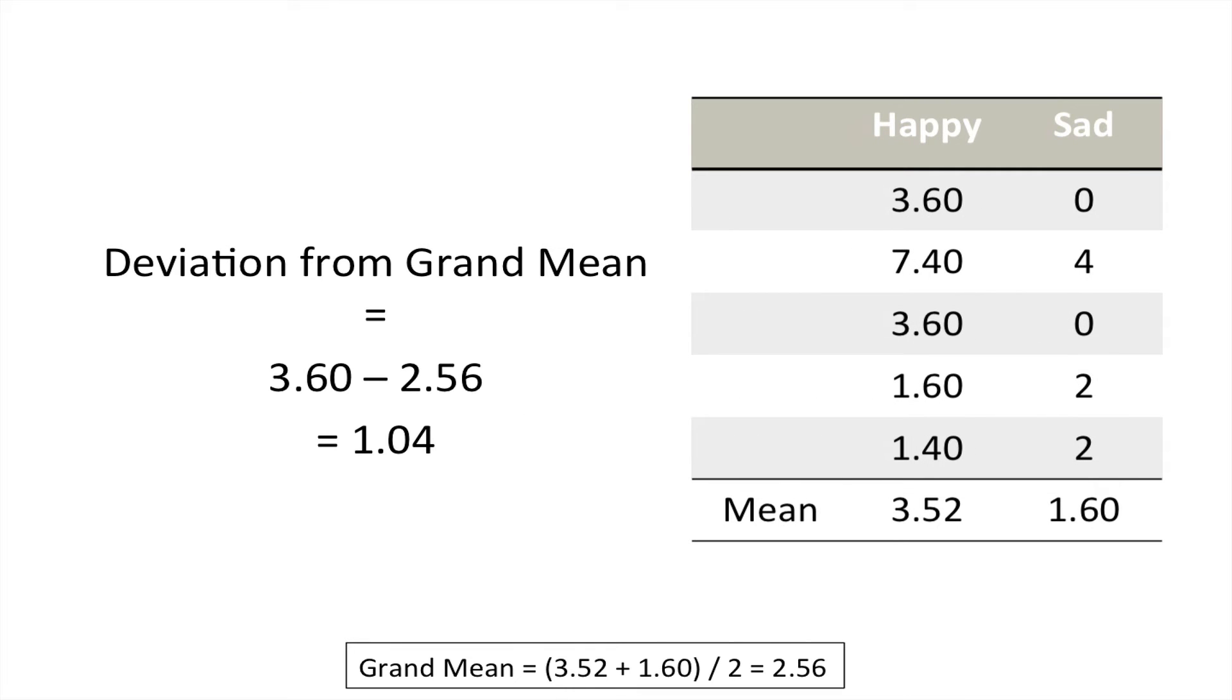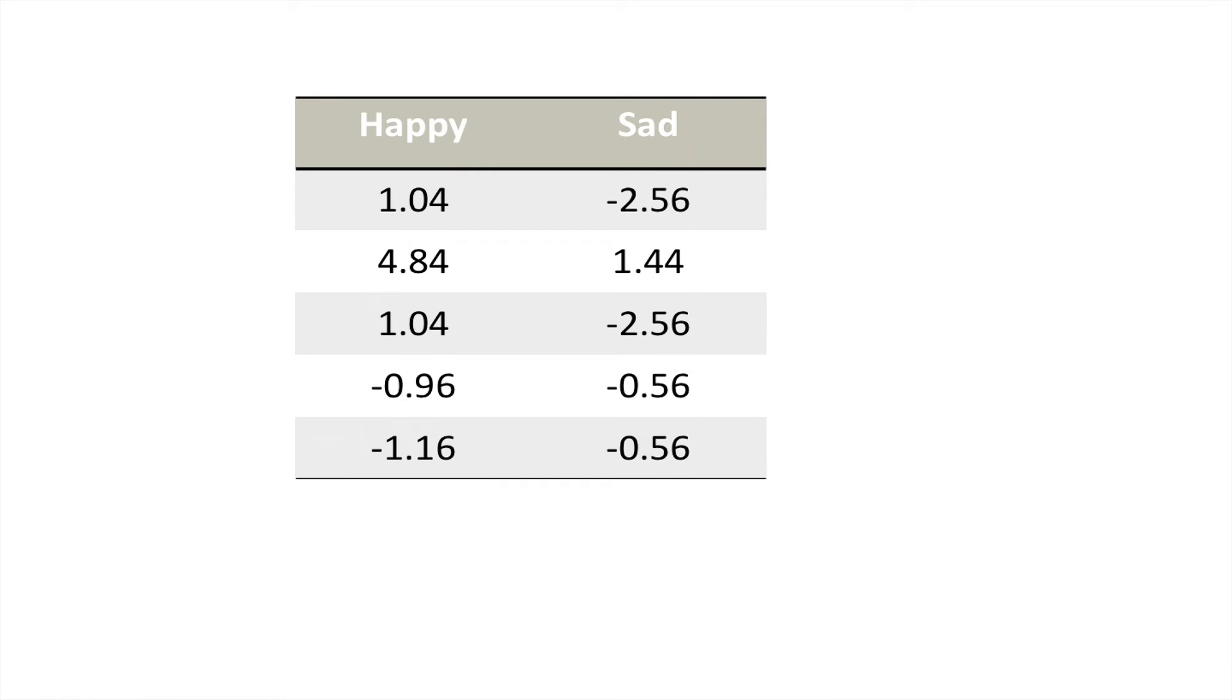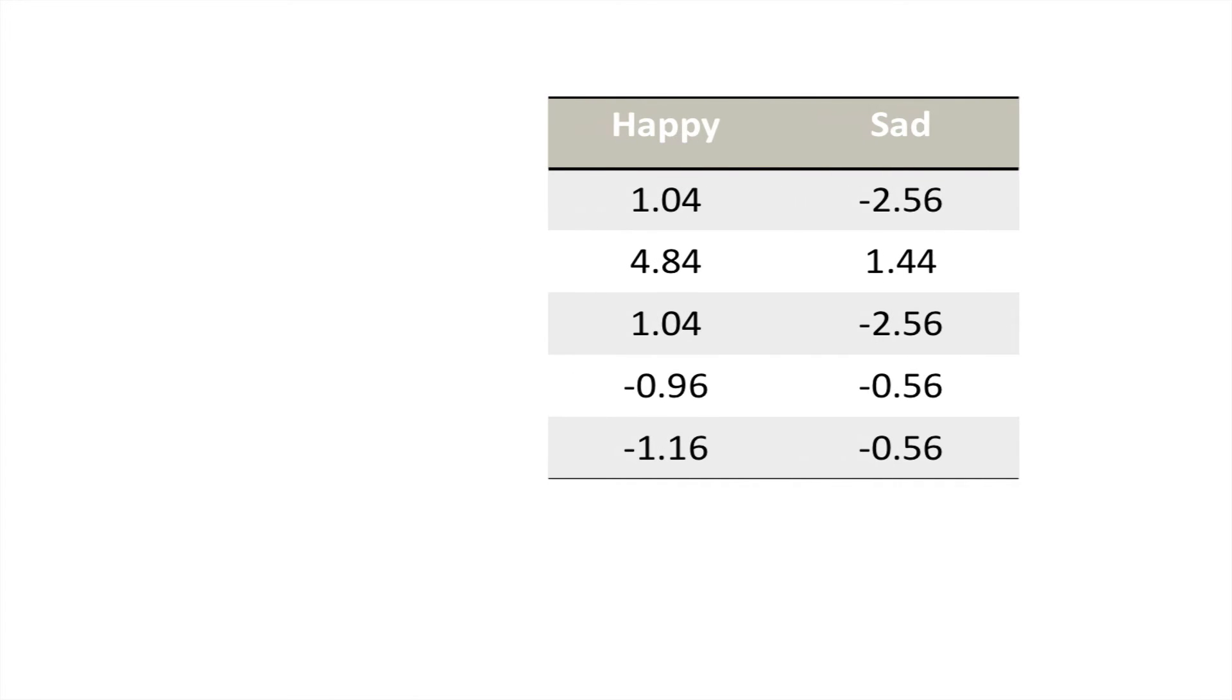We want to take each individual score away from the grand mean. In the first example, we've got 3.6 minus the grand mean equals 1.04. Here are those values. As is usual in ANOVA, we're going to square those values to get rid of any negative numbers.